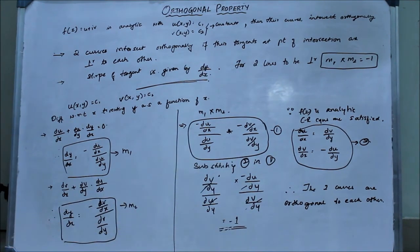So with this, we can prove that the tangents are perpendicular to each other, and hence the two curves are orthogonal to each other. Thank you.